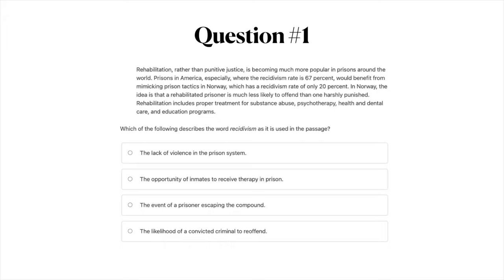Question number one. Go ahead and pause the video to read this passage. Which of the following describes the word 'recidivism' as it is used in this passage? A: the lack of violence in the prison system; B: the opportunity of inmates to receive therapy in prison; C: the event of a prisoner escaping the compound; or D: the likelihood of a convicted criminal to re-offend.